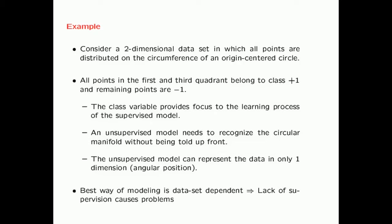On the other hand, when you have an unsupervised model, it somehow needs to recognize the circular manifold without being told up front. Once the model recognizes that the data is distributed on the circumference of a circle, it can represent the data in only one dimension using the angular position of that point, because the radius can be a global parameter for this model. In general, for unsupervised learning, the best way of modeling is dataset-dependent.